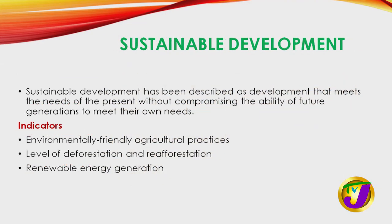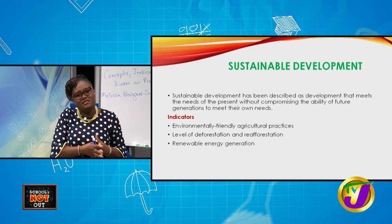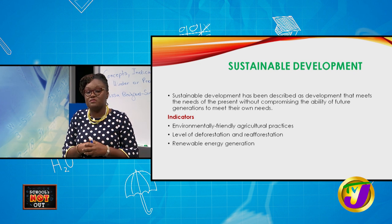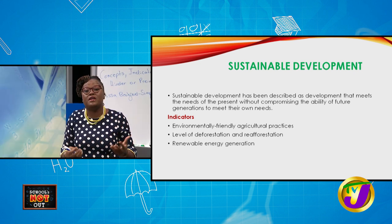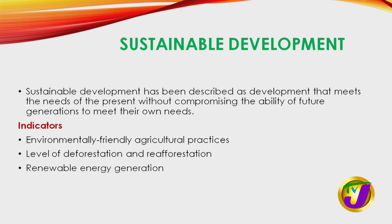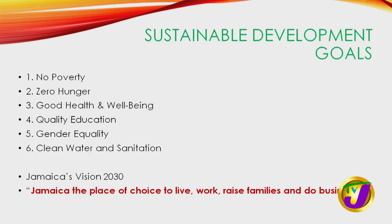Another kind of development is sustainable development, which looks at development not just for the present but for the future — as we also noted under the human development paradigm. Some indicators of sustainable development include environmentally friendly agricultural practices, levels of deforestation and reforestation, and renewable energy generation. We are thinking about things that have to do with preserving the environment and ensuring that something is left for the future.